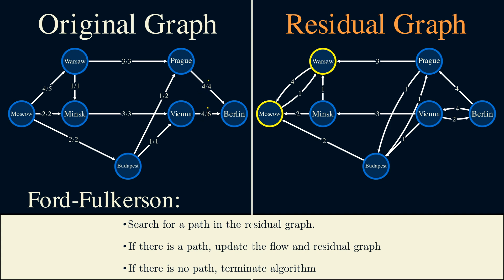But does not having a path in the residual graph guarantee that we have an optimal solution? One way to see that this is optimal is to notice that since Moscow and Warsaw can't reach any other vertices in the residual graph, all of the edges leaving Moscow and Warsaw in the original graph must be at maximum capacity. The sum of these capacities is 8, which means that we can't send more than 8 flow out of Moscow and Warsaw. So that means we can't send more than 8 flow into Berlin, so 8 is indeed the maximum flow.